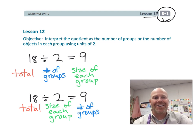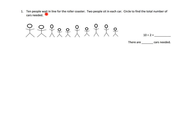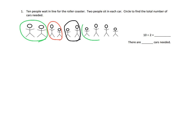Anyway, let's get started. Here we've got 10 people waiting in line for the roller coaster. Two people can sit in each car — circle to find the total number of cars. Here's two people, so that's one car. Here's two people, that's another car. Here's two people, that's a third car. Here's two people, so that's a fourth car. And finally, here's two people, so that's a fifth car. So 10 divided by 2 is 5. There are 5 cars needed.